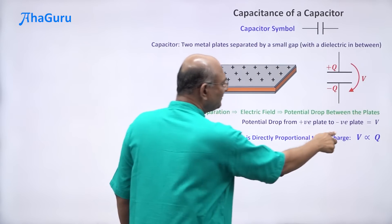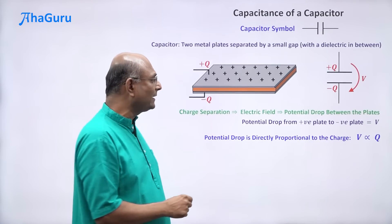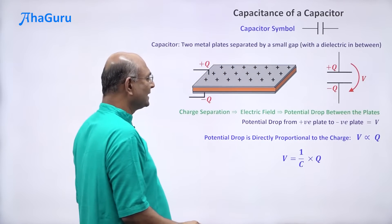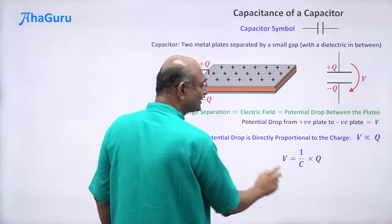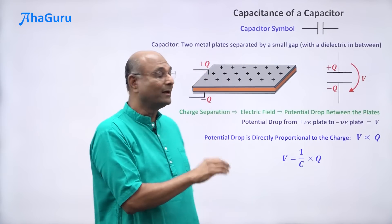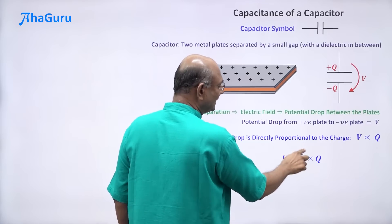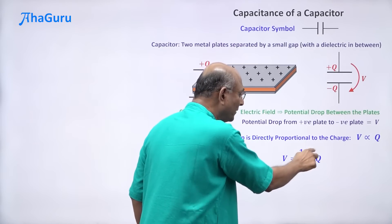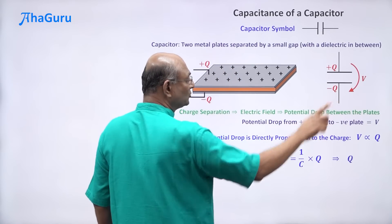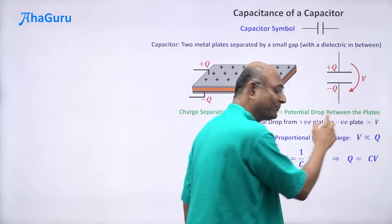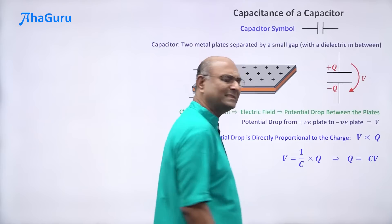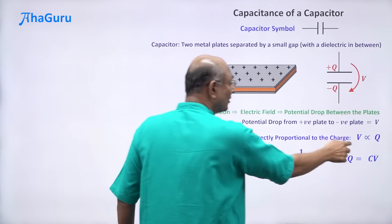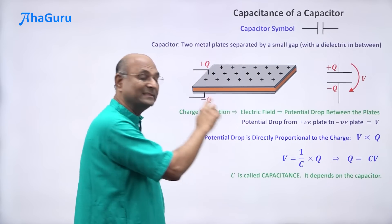Whenever we have proportionality, we can make it an equality by putting a constant of proportionality. So V equals KQ generally. For historical reasons, this constant is written as 1 by C. So V equals Q by C, or Q equals CV. This is the most important formula to remember. C is called the capacitance — it is the constant of proportionality.